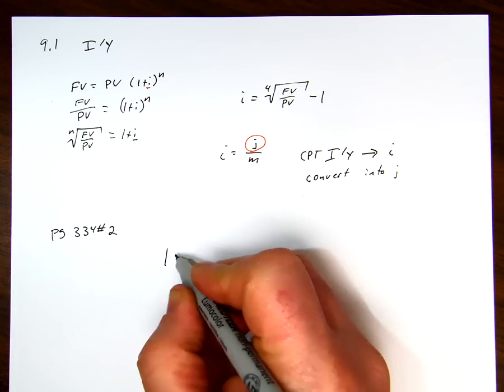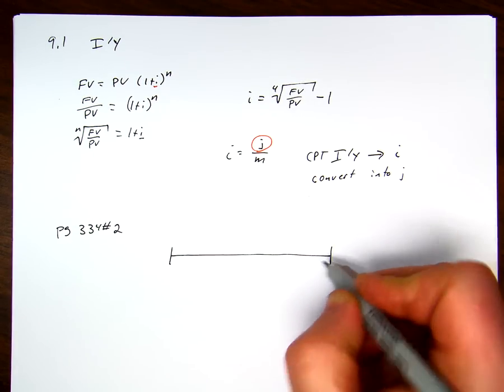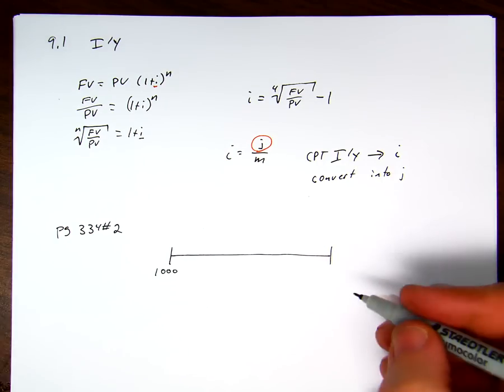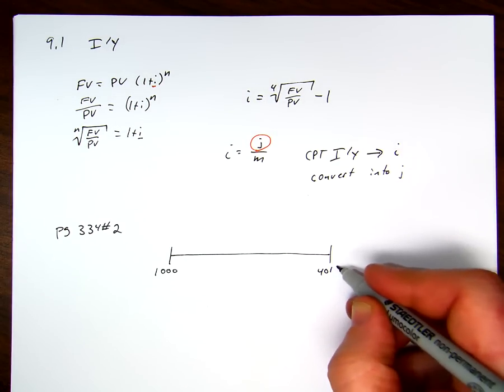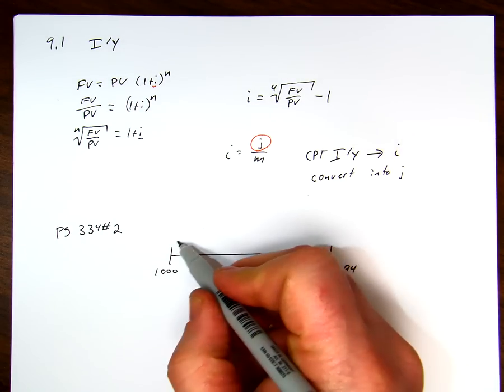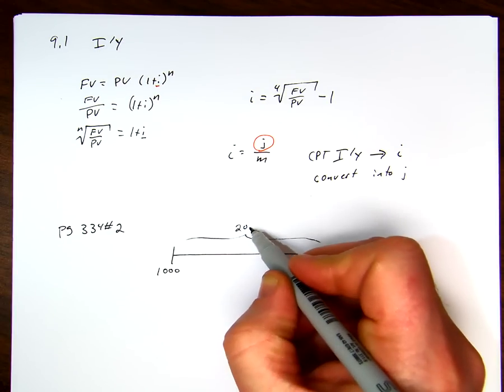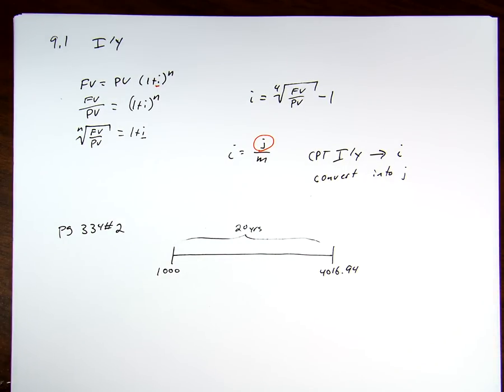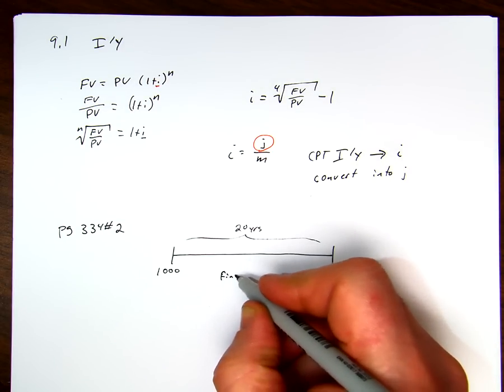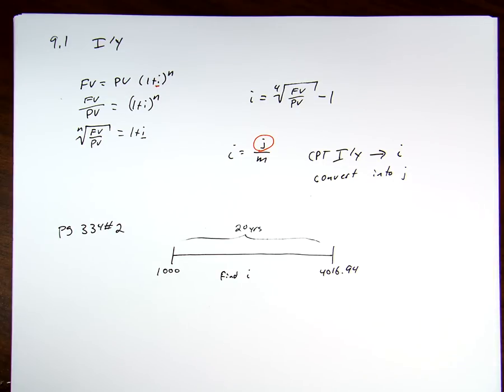So we do the same diagram as we did before. We start off with $1,000 and we end up with $4,016.94. We know that the duration of this is 20 years and we want to find out the value of i. And this is a nominal rate.